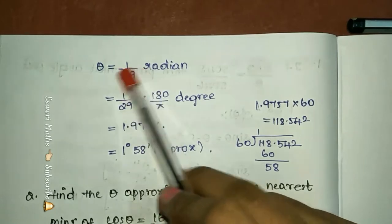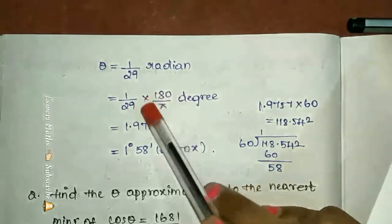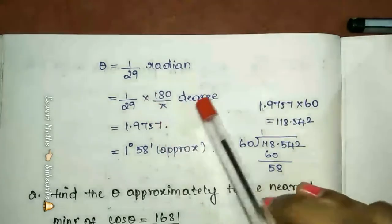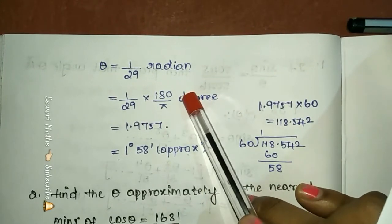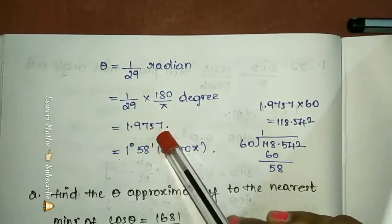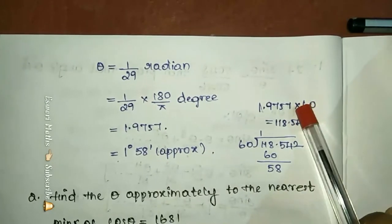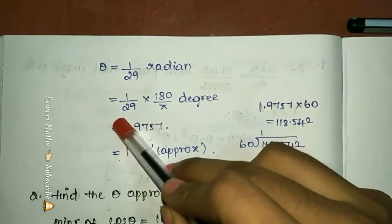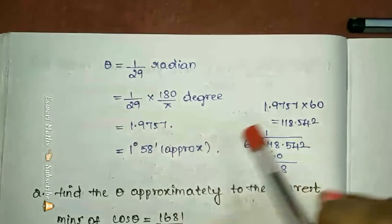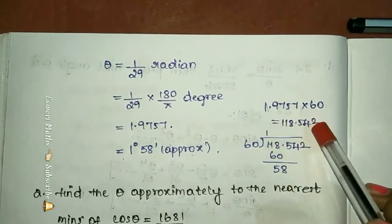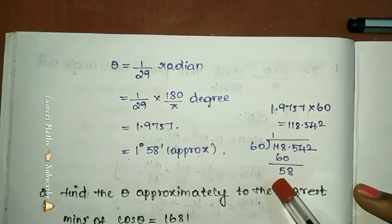This is in radians. We can multiply to convert to degrees. We multiply by 180 over pi to get the degree value. Dividing 60 into the fractional part, we divide 60 by 1 to get the minutes value.